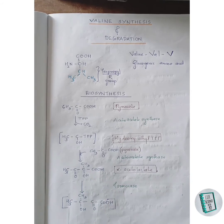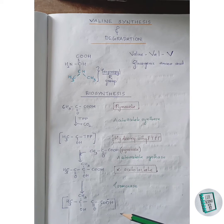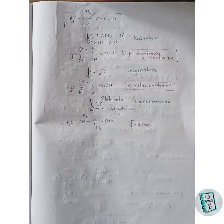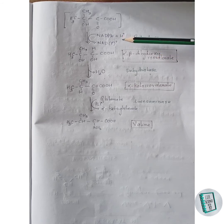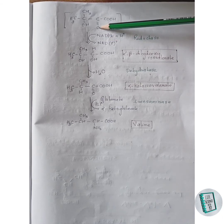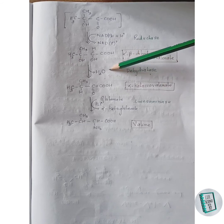In the third step, alpha-acetyl lactate gets isomerized to an intermediate in the presence of isomerase, where rearrangement of atoms occurs to form an isomeric form. This isomeric form then undergoes reduction in the next step in the presence of reductase enzyme to form alpha-beta dihydroxy isovalerate. NADPH2 or NADH2 provides the hydrogen atoms — one hydrogen attaches to this carbon and another to this oxygen.